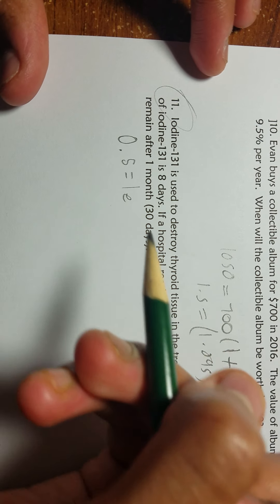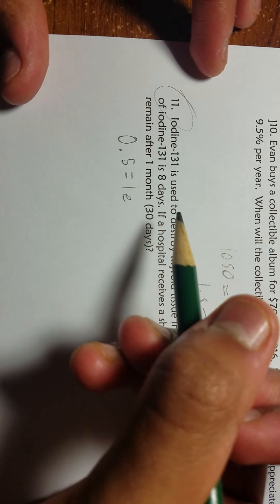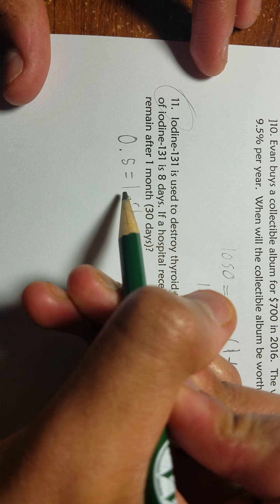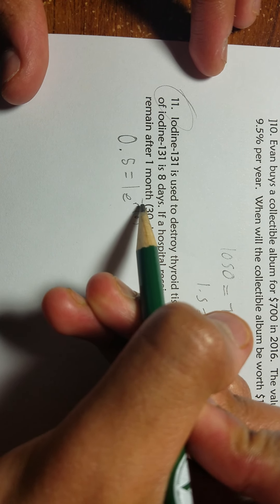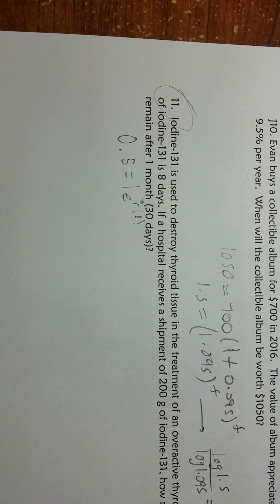We're using e because it's continuous compounding for half-life. We know that time is eight days, but we're trying to find that rate because it's P e^(rt). We know eight days is the time. If we can find this rate, do not round this rate number right here, we can answer the rest of this question.